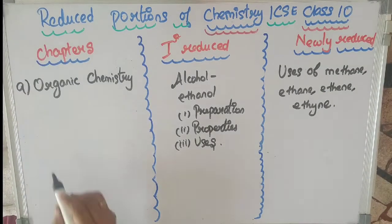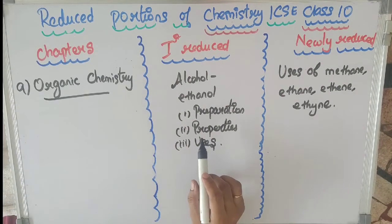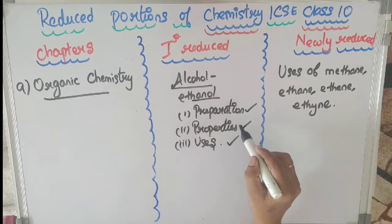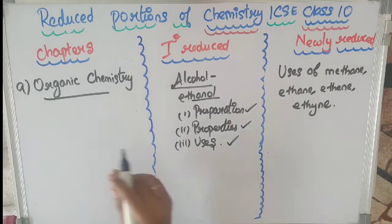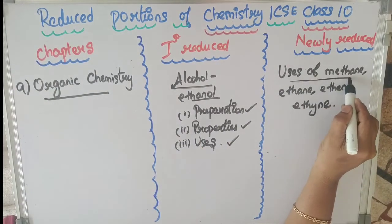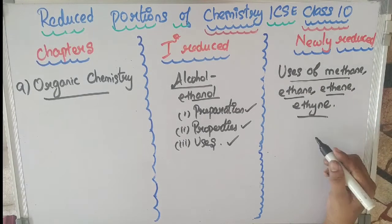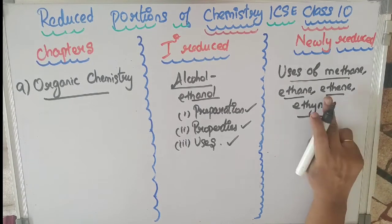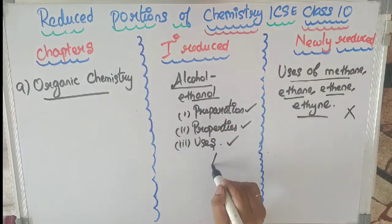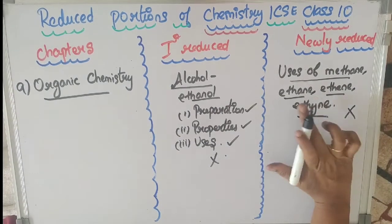In the ninth chapter, Organic Chemistry, during the first reduction the topic of alcohol — specifically ethanol, including its preparation, properties, and uses — was completely removed. In the new reduction, the uses of methane, ethane, ethene, ethyne, and other hydrocarbons have all been removed.